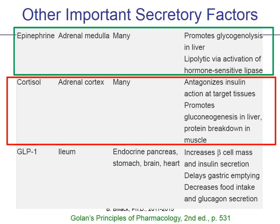Cortisol is another adrenal gland product, made in the cortex. You know cortisol as a type of glucocorticoid — it's called that because cortisol antagonizes the action of insulin and promotes gluconeogenesis in the liver, elevating blood glucose. This is why a patient on systemic glucocorticoid therapy for an inflammatory disease can have their blood glucose levels impacted.